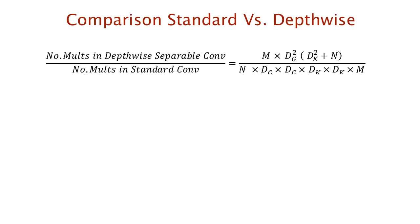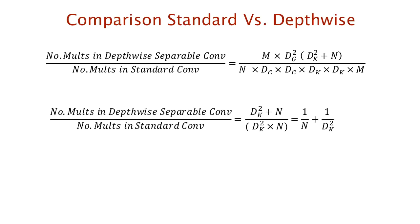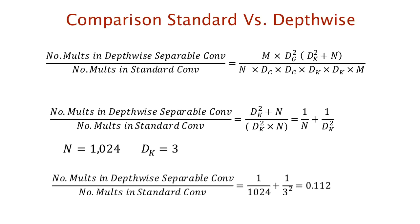Comparing standard convolution with depthwise separable convolution, the ratio is 1/n + 1/dk². To put this into perspective: with an output feature volume n of 1024 and a kernel size dk of 3, plugging these values in gives 0.112. In other words, standard convolution requires about 9 times more multiplications than depthwise separable convolution — a significant saving in computing power.